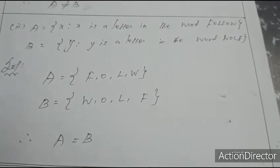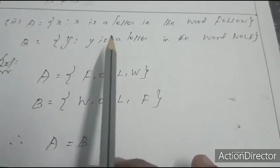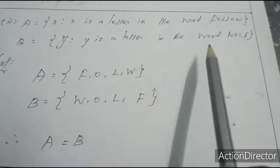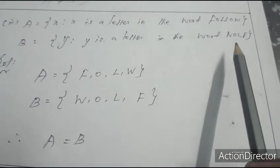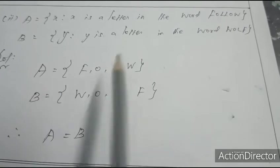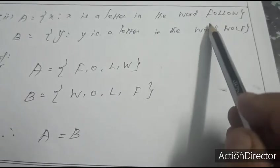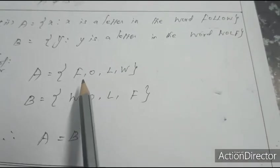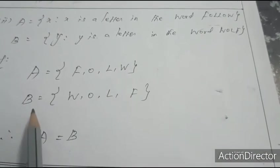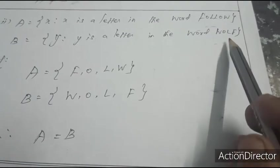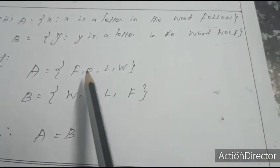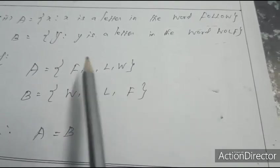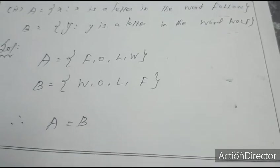Second: A = {x : x is a letter in the word FOLLOW} and B = {y : y is a letter in the word WOLF}. A = {F, O, L, W} (each letter written once). B = {W, O, L, F}. Comparing: F=F, O=O, L=L, W=W — both sets have the same elements. Therefore A = B.